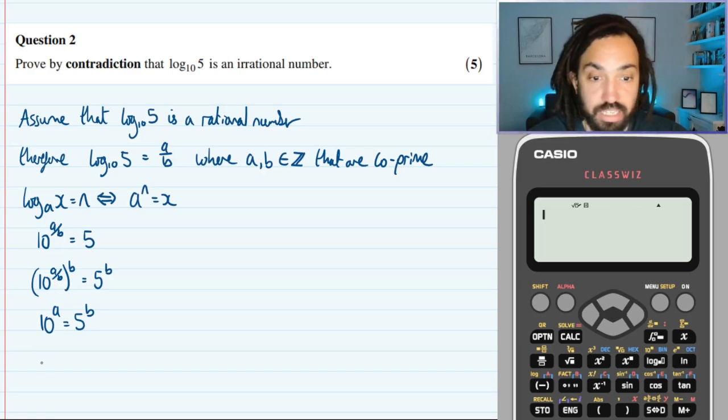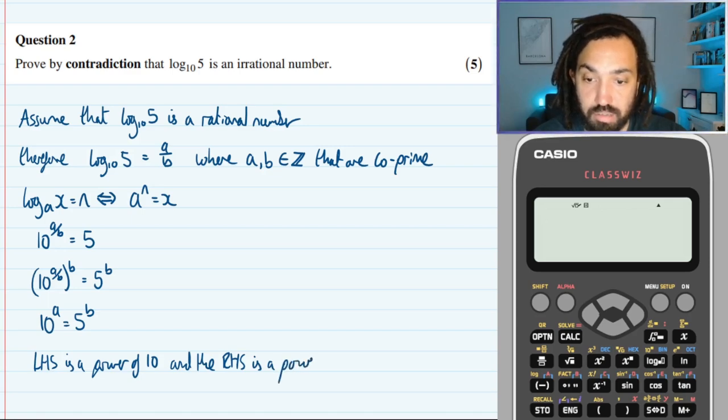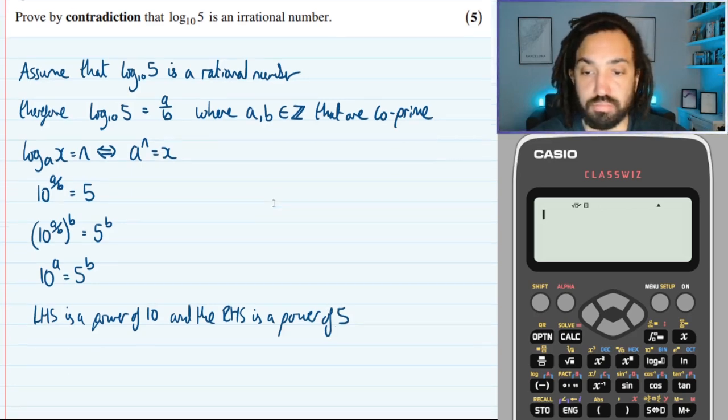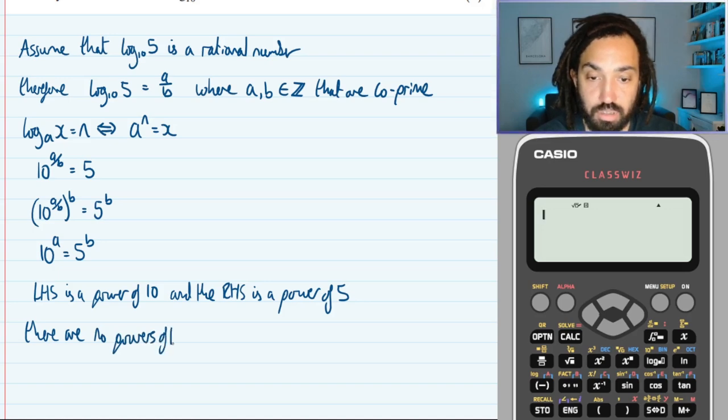So we can say that the left-hand side is a power of 10 and the right-hand side is a power of 5. There are no powers of 10 that equal a power of 5.